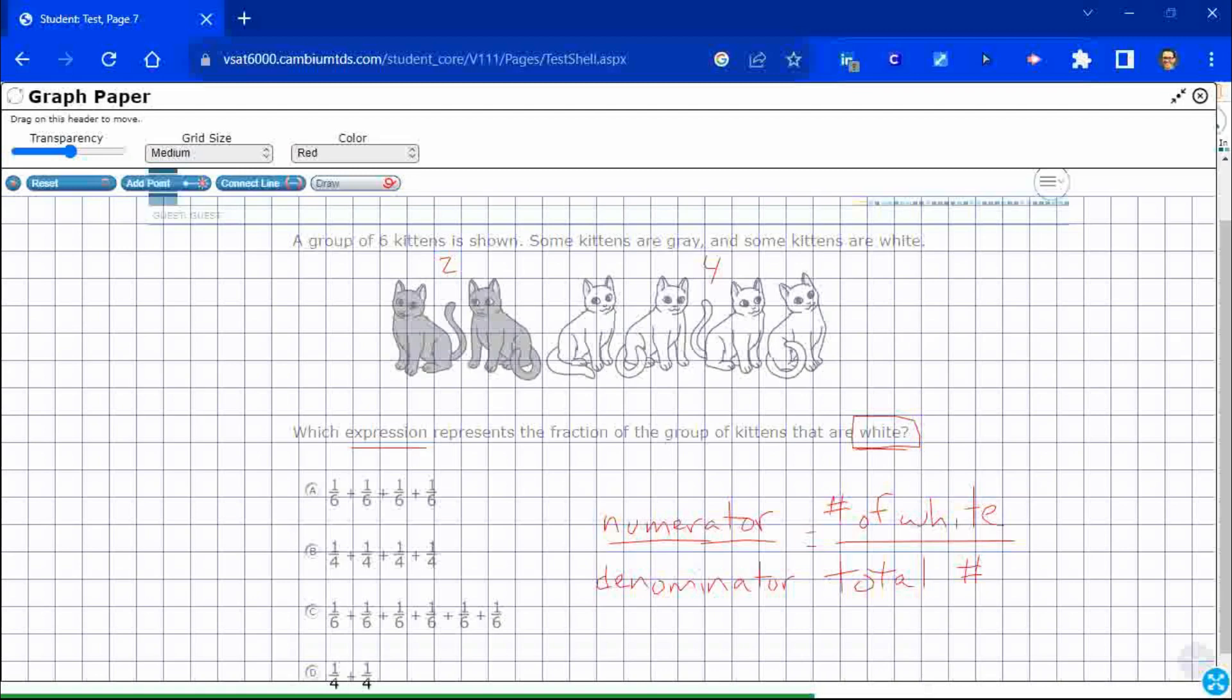we've got number of white kittens. Okay. That's pretty easy. Right? There's four of them. And how many kittens are there altogether? Four plus two, that makes six.